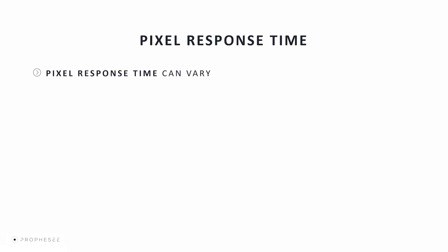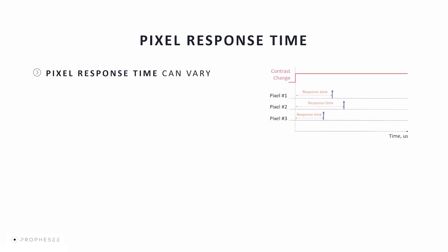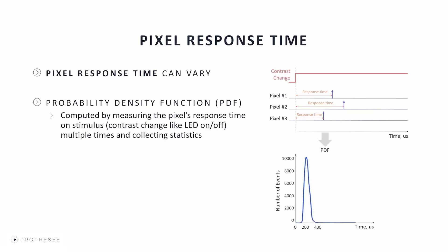Pixel Response Time: the time delay from a contrast change to the change detection by a single pixel is called the pixel response time, and it is not fixed — it can vary. For example, given a contrast change at time t0, pixel 1 may react at t1, pixel 2 at t2, and pixel 3 at t3 — each with a different response time. We compute a probability density function to characterize the response time among pixels and trials. The PDF shows that most pixels respond within 250 microseconds, though some respond much faster or slower. This is the basis for measuring pixel latency and jitter.